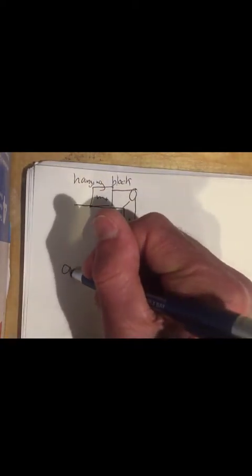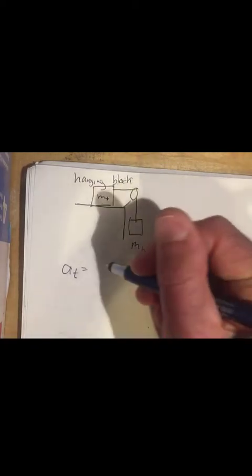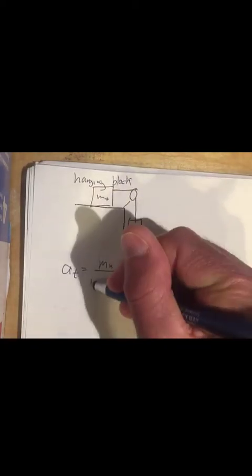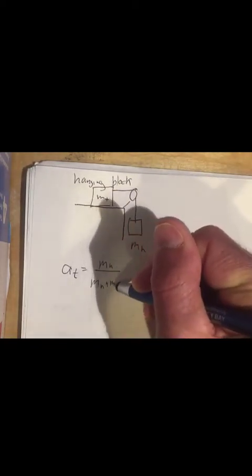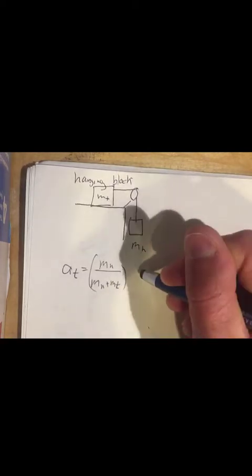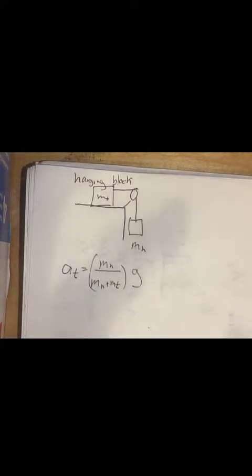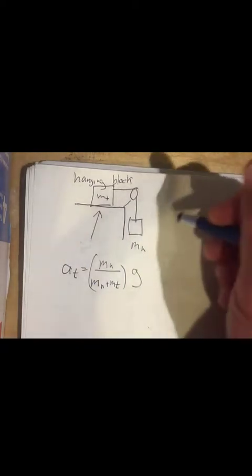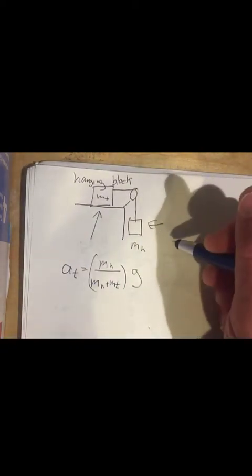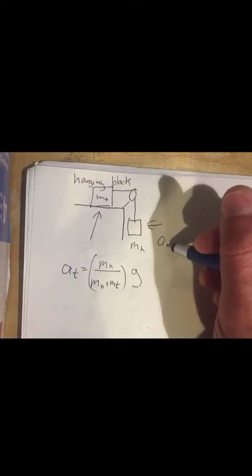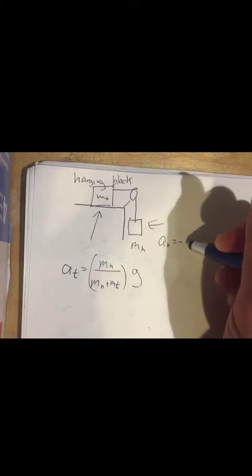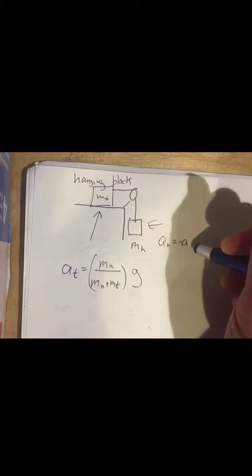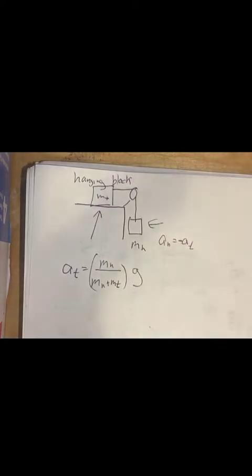And we came up with the acceleration of the block on the table is equal to the mass of the hanging block divided by the mass of the hanging block plus the mass of the block on the table times g. That's going to be the acceleration of the block on the table. And the acceleration of the hanging block is going to be downward, so it's negative. It's going to be the negative of the acceleration of the block on the table because they both are connected.